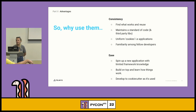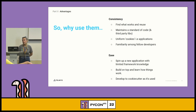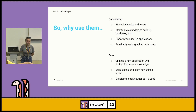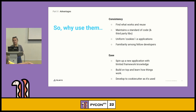Uniform services are easier to work with — as an engineer, it's easier to go into something you already know. With cookie cutters, you'll know the base of every service as soon as you look at it. You won't have to wade through code you don't know to understand it. And ease — you can spin up a new application with limited framework knowledge. This was my biggest win when starting out. I didn't know AioHTTP or FastAPI, but I was able to create a service without in-depth knowledge and then look at it afterwards. For students or people straight out of college, that might be one of the main benefits. You can build on top and learn how things work.